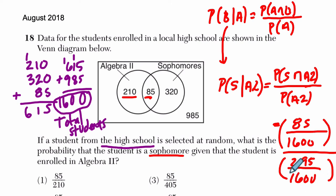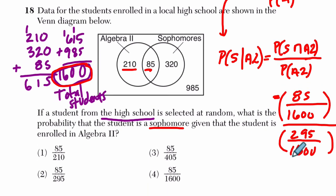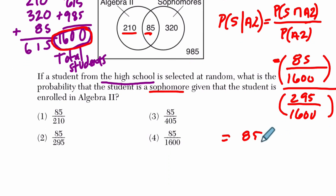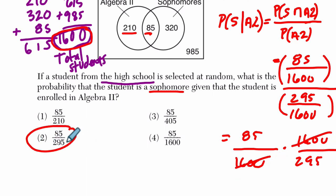Now, look at this. I realize I don't even need to know the total students because when you divide by 1,600 in both cases, they will cancel out. When you're dividing by fractions, you multiply by the reciprocal. So it's going to give me 85 over 1,600 times 1,600 over 295. You divide by fractions, you multiply by the reciprocals, and these cancel out. Long story short, we get 85 over 295.